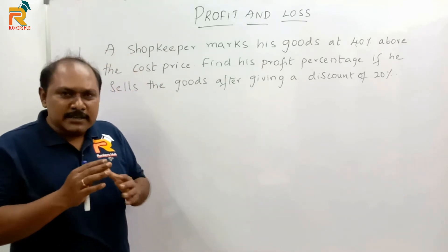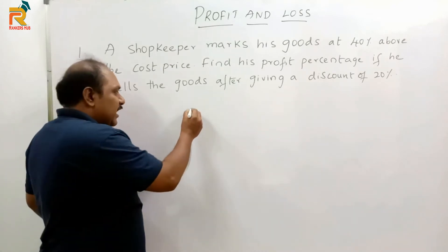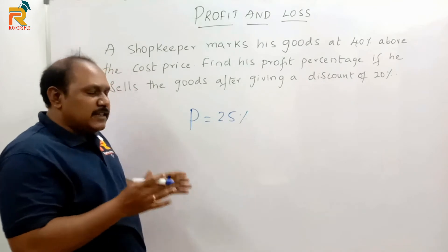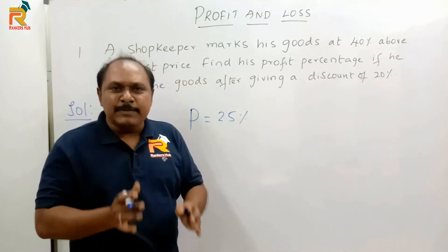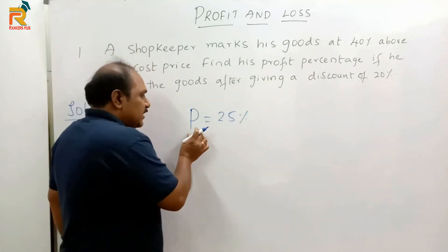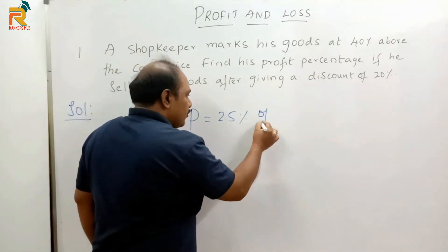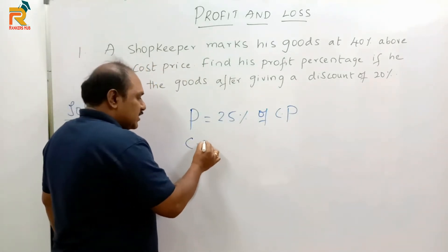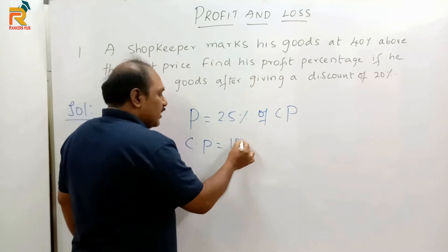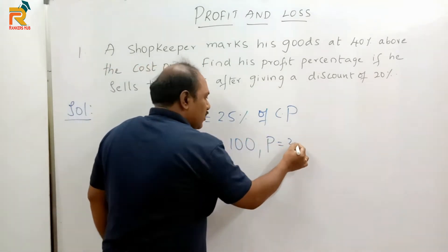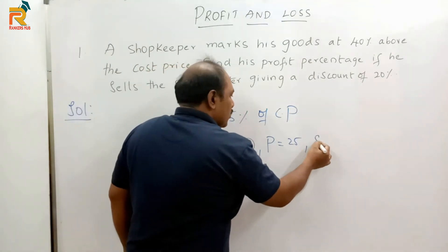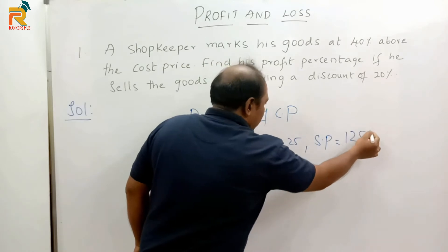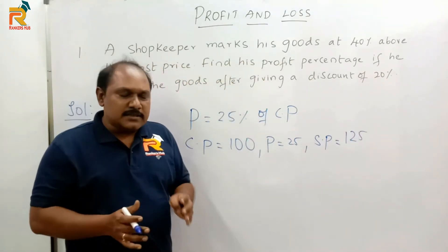Now the basic points — let us discuss. Suppose I say: by selling an article there is a profit of 25%. Whenever we say profit, the profit percentage should always be calculated on cost price. So when I say there is a profit of 25%, it means 25% of cost price. The simple meaning of this is: if the cost price of the article is 100, the profit earned by selling that article is 25, so the selling price should be 100 plus 25, which is 125.